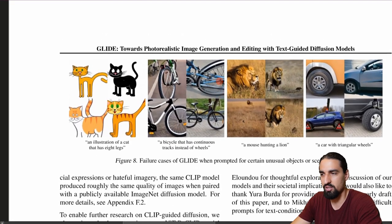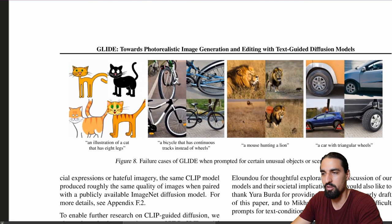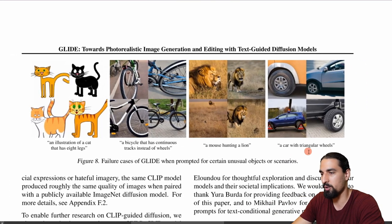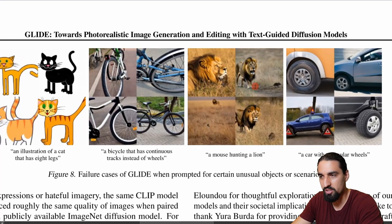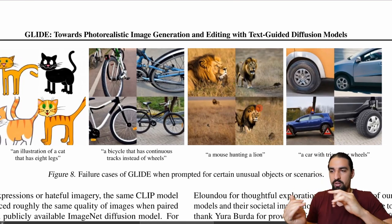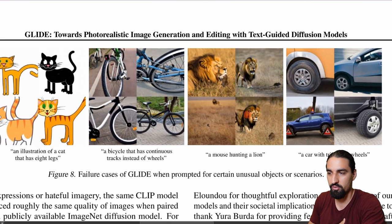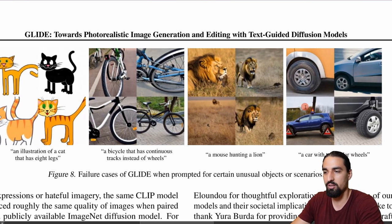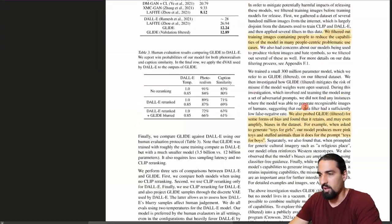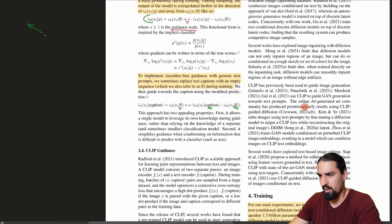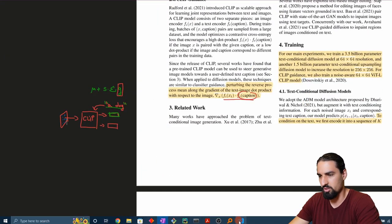Here we can see an example: 'a mouse hunting a lion.' The model does not understand the direction — it appears as if the lion is hunting the mouse and not the other way around. So it understands the association, but not the causal relationship. That's pretty much it for the paper overview. Now let's go back to the code and understand how this looks in actual code.